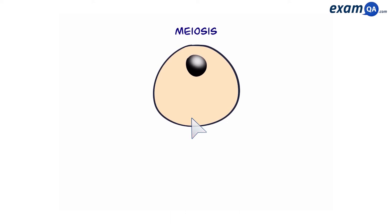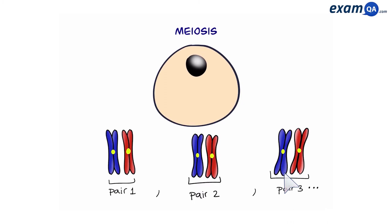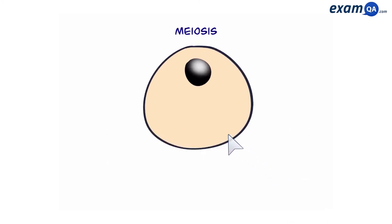We're going to start with a basic cell. It has 23 pairs of chromosomes. And just like mitosis, before meiosis can occur, the chromosomes have to replicate. Now let's look inside the cell and see what happens.